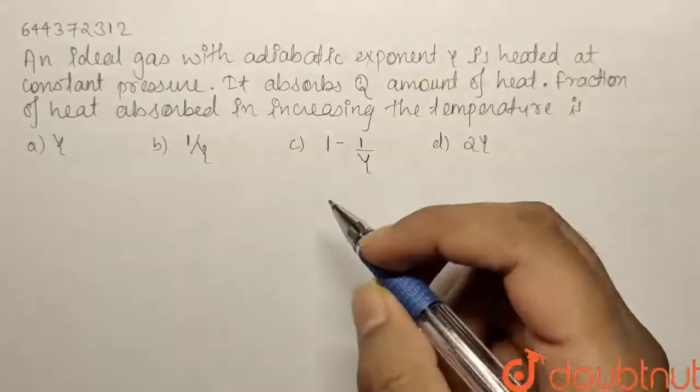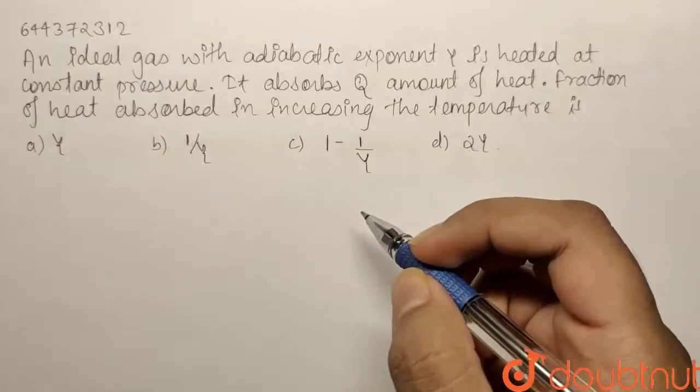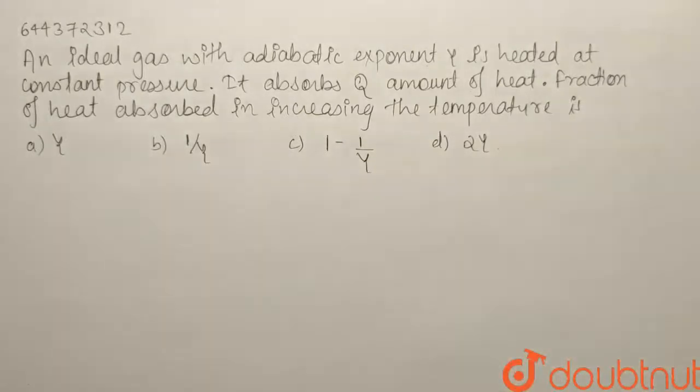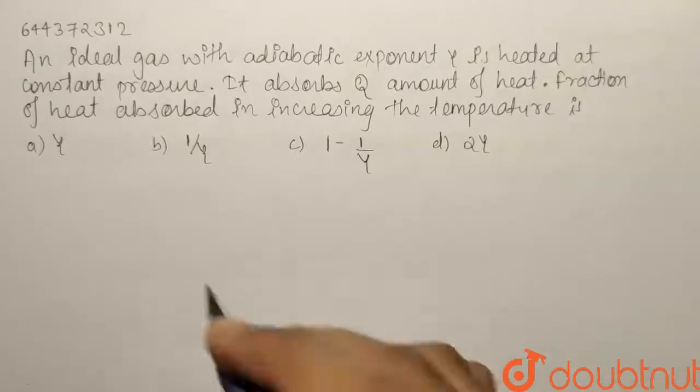Here we have a question from thermodynamics. An ideal gas with adiabatic exponent γ is heated at constant pressure. It absorbs Q amount of heat. Fraction of heat absorbed when increasing the temperature is?